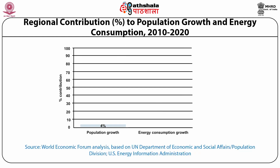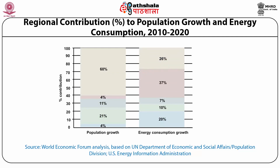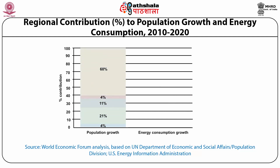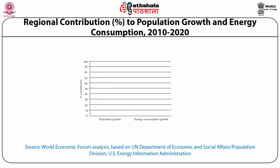As per the US Energy Information Administration, the regional contribution to population and energy consumption for the duration 2010 to 2020 was assessed. Among the main contributors, China contributes around 4% of population growth and around 37% of energy consumption. For the Indian scenario, it is mainly around 21% of population growth whereas the energy consumption growth was around 10%.